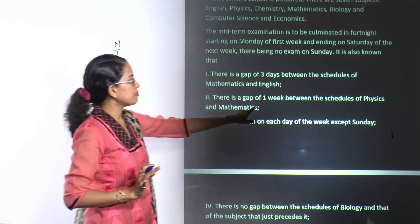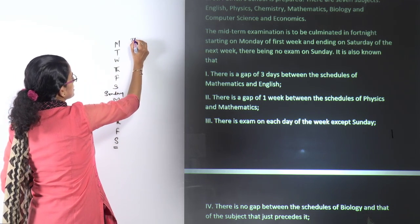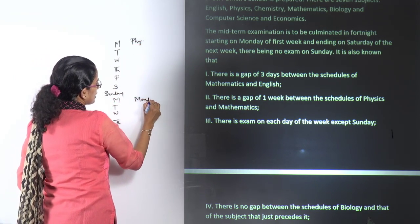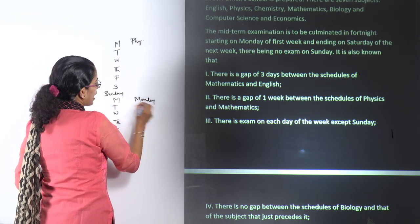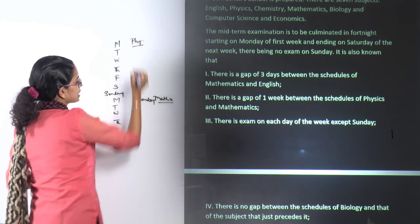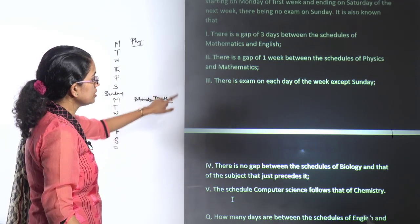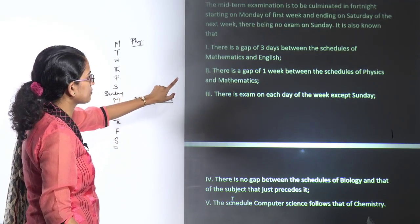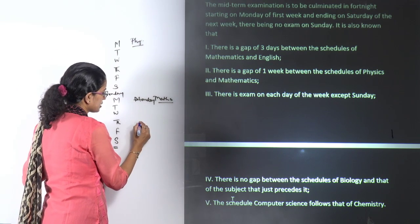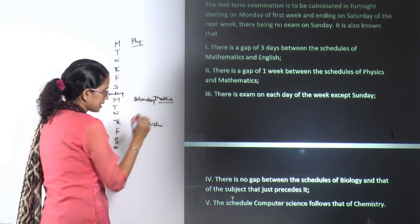There is a gap of one week between physics and maths. So let's say physics is here and maths is on Monday — Monday to Monday. You also have a three-day gap between maths and English, so Tuesday, Wednesday, Thursday — English is placed there.